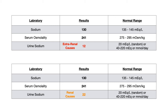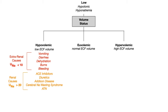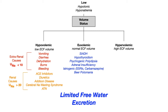That was the most complicated part of this entire video. Going back to volume status — if we have normal ECF volume, so we're euvolemic, the causes include SIADH, hypothyroidism, psychogenic polydipsia, adrenal insufficiency, medications that cause SIADH, and beer potomania.